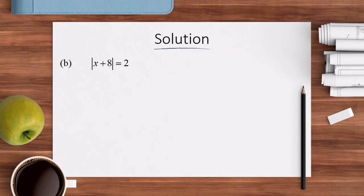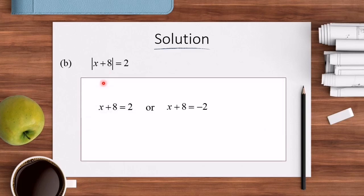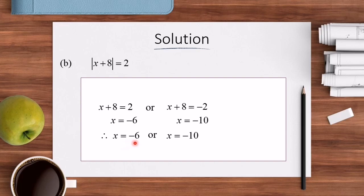Let's look at the solution for Question B: |x + 8| = 2. Since this is 1 absolute value, we straight away use the basic definition. So we get X + 8 = 2 or X + 8 = −2. Solving separately, we get X = −6 or X = −10.